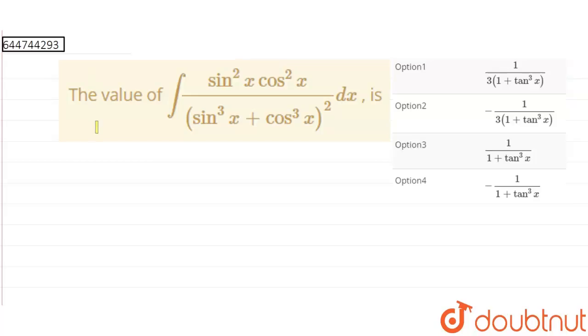Hello everyone, in this question we are given that the value of integration sin²x·cos²x divided by (sin³x + cos³x)² dx is equal to, with options provided.